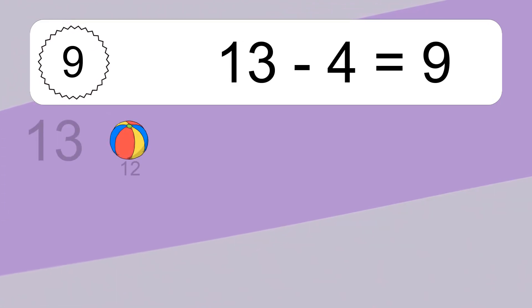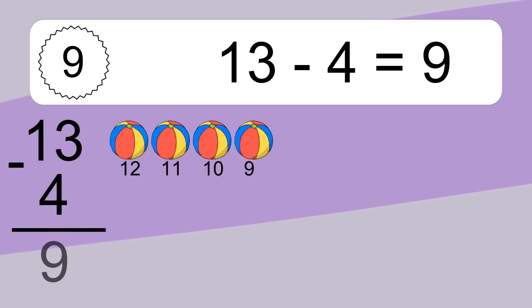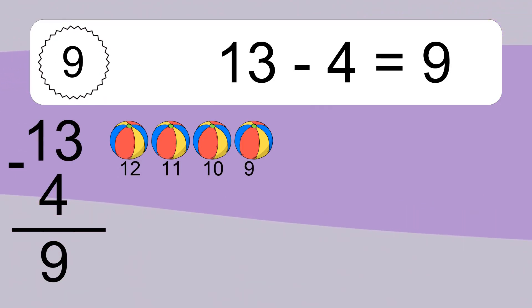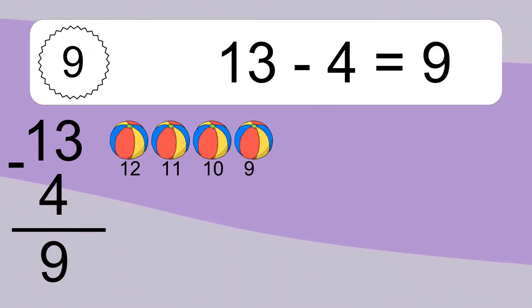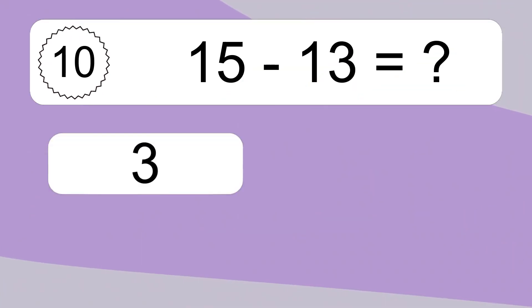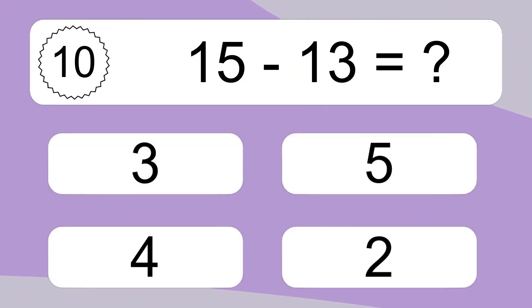13 minus 4 equals what? 13 minus 4 equals 9. Let's count it: 12, 11, 10, 9.